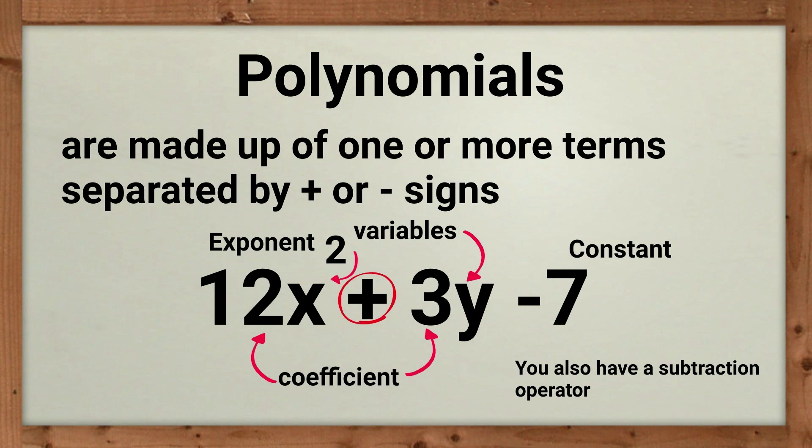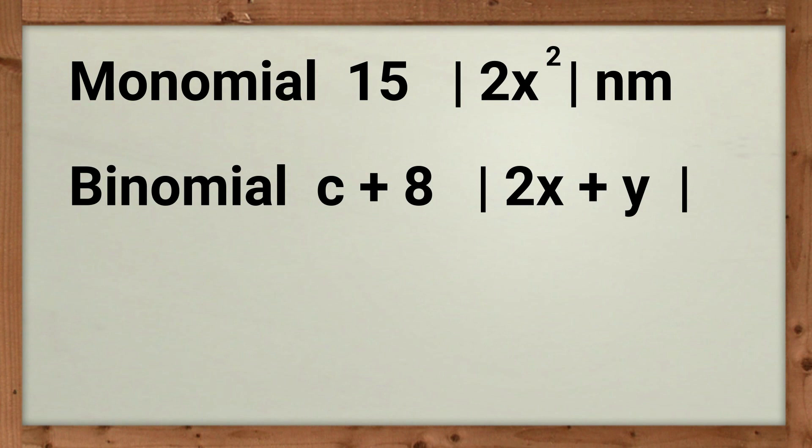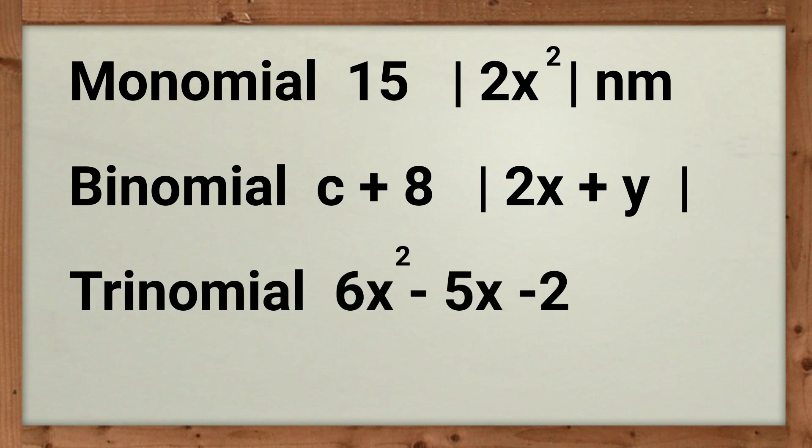Now you will encounter three major types. A monomial is an expression that has exactly one term. A binomial is an expression that has exactly two terms. And then a trinomial is an expression that has exactly three terms.